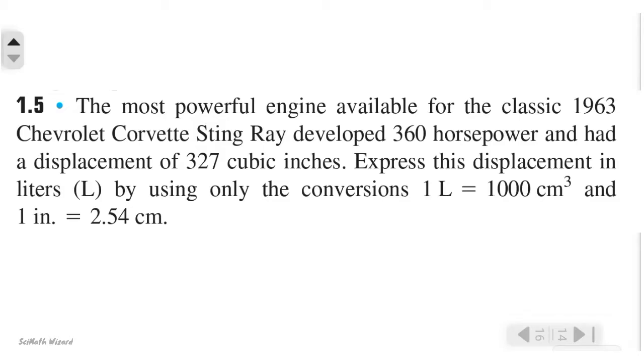For this problem, the most powerful engine available for the classic 1963 Chevrolet Corvette Stingray developed 360 horsepower and had a displacement of 327 cubic inches. Express this displacement in liters by using only the conversions: 1 liter equals 1000 cubic centimeters and 1 inch equals 2.54 centimeters. To solve this, let's write down the given first.